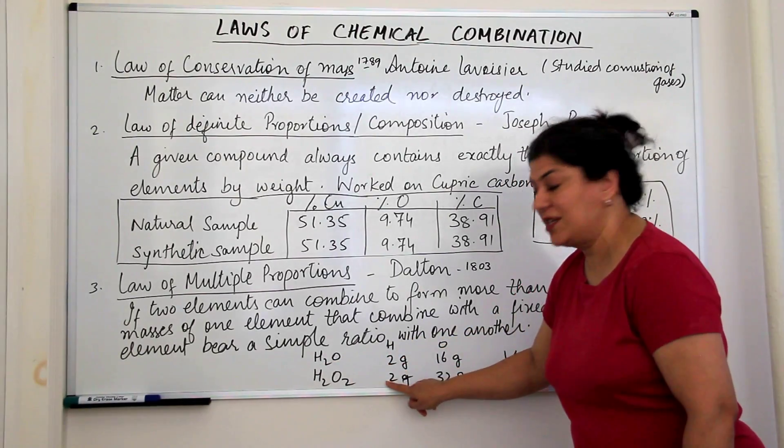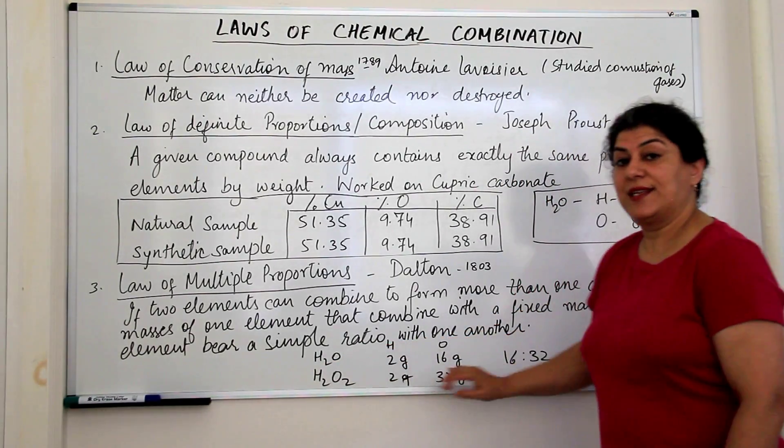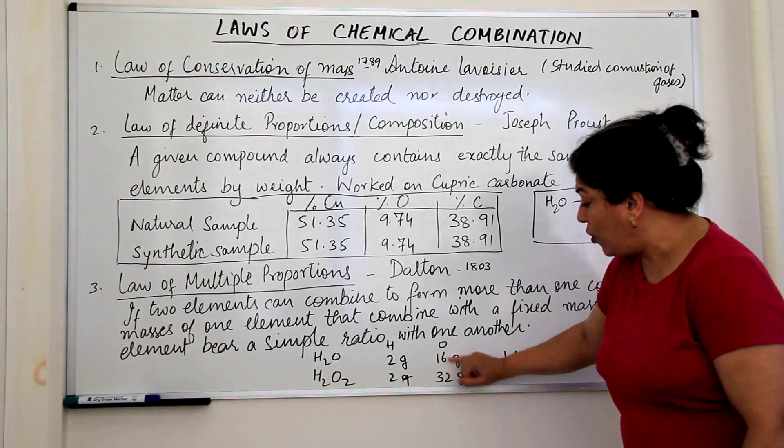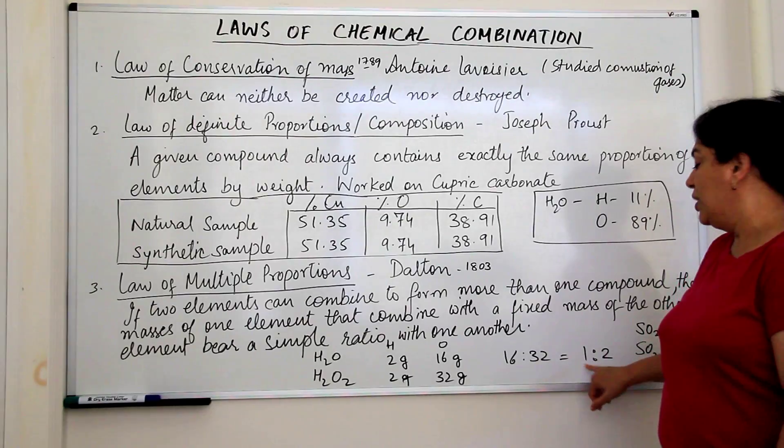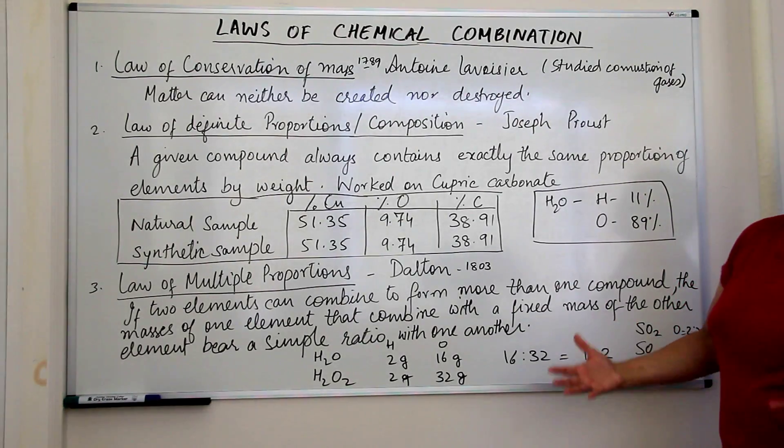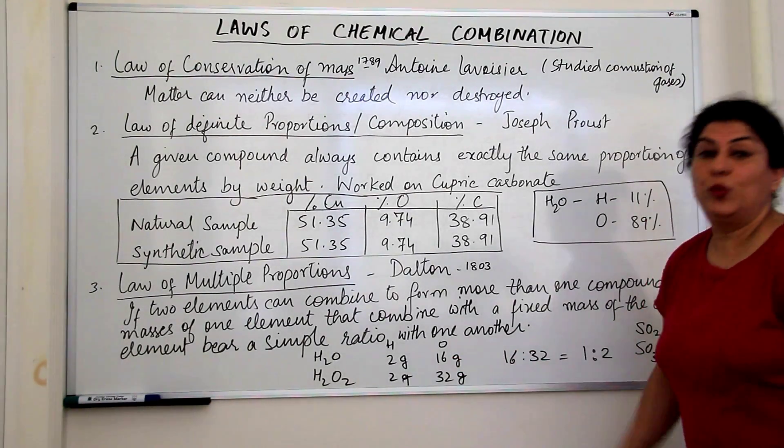So the ratio of these two, 16 to 32 would be 16 is to 32, is 1 is to 2. There we are a simple ratio with each other.